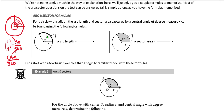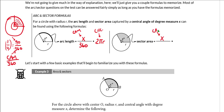The formulas to memorize are as follows. For arc length: take the central angle measure (x degrees) over 360, then multiply by the circumference, 2πr. For sector area: take the central angle measure over 360, then multiply by the total area, πr². Arc length equals (CAM/360) × 2πr, and sector area equals (CAM/360) × πr².